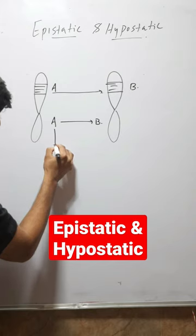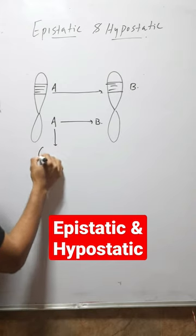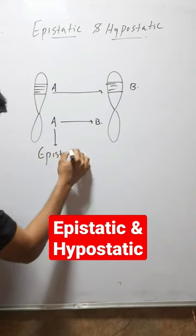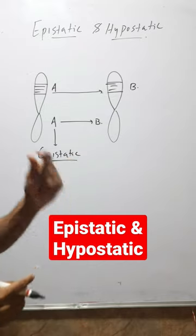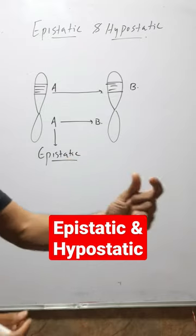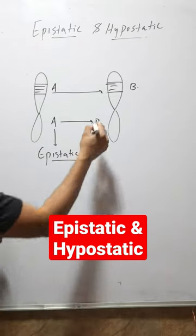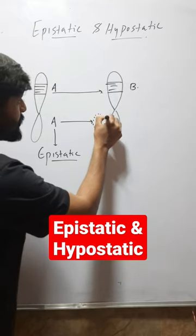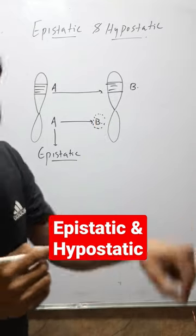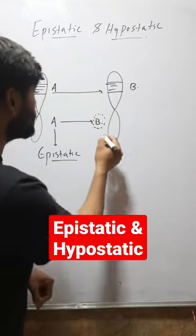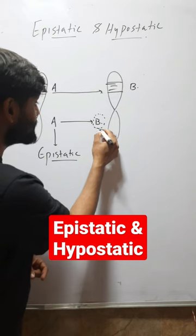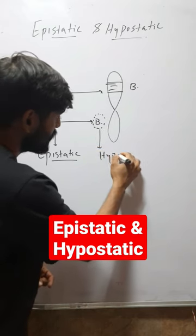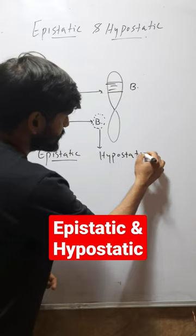This gene A will be called epistatic. The gene that suppresses another gene will be called epistatic. Here that B gene is suppressed, so the gene which is suppressed by another gene will be called hypostatic.